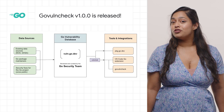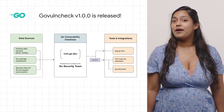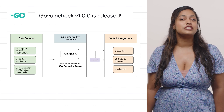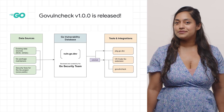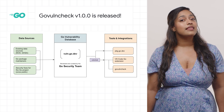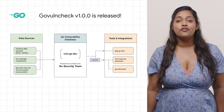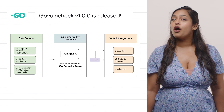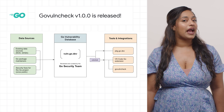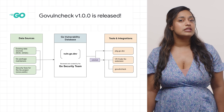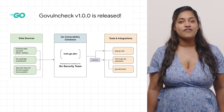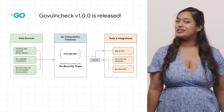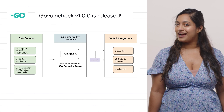Go Vulncheck V1.0.0 has been released, along with V1.0.0 of the API for integrating scanning into other tools. Go Vulncheck is a command line tool that helps Go users find known vulnerabilities in their project dependencies. The tool can analyze both code bases and binaries, and it reduces noise by prioritizing vulnerabilities in functions that your code is actually calling. Check out the post for more details, including security best practices.